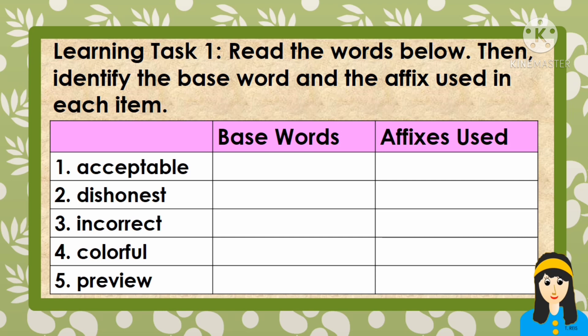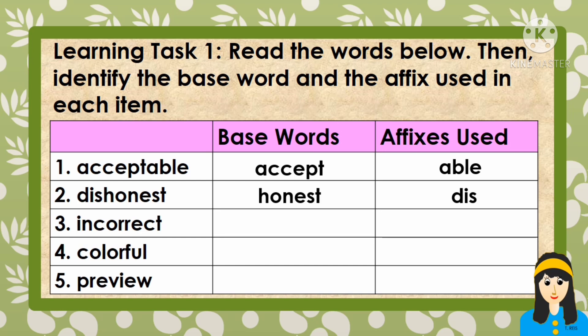For number one, the word is acceptable. The base word is accept, and the affix used is able. For number two, the word is dishonest. The base word is honest, and the affix is dis. For number three, the word is incorrect. The base word is correct, and the affix is in. For number four, the base word from colorful is color, and the affix used is ful. For number five, the base word from preview is view, and the affix used is pre.